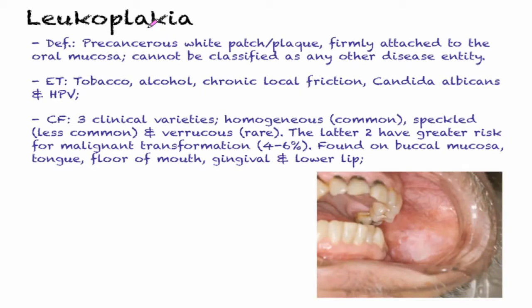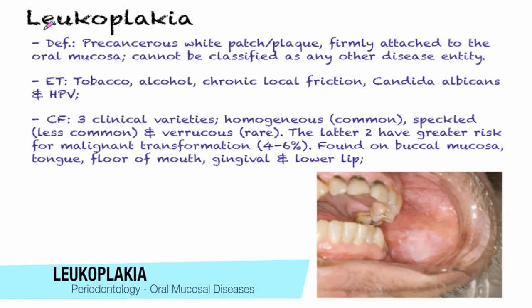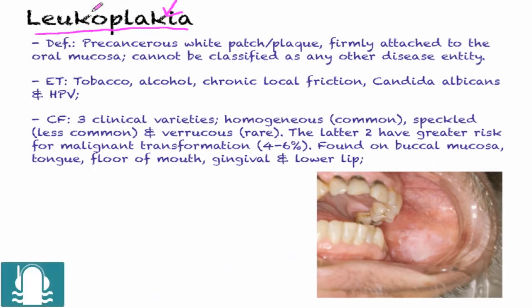The first type of white lesion we're going to talk about today is leukoplakia. 'Plachia' meaning plaque, 'leuko' meaning white — so, a white plaque.